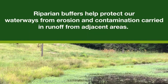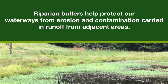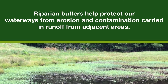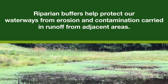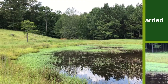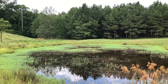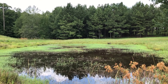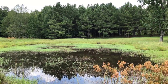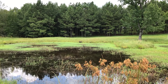Riparian buffers, which are found along rivers and streams, help protect our waterways from erosion and contamination carried in runoff from adjacent areas. Vegetation in these areas reduces the velocity of flood waters, which reduces erosion. These areas can also serve as natural filters to trap sediments before they reach rivers.